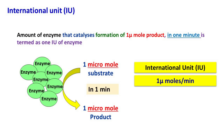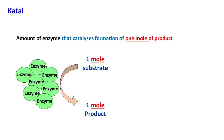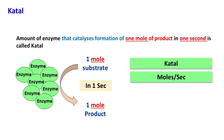The next unit is katal. Katal is defined as the amount of enzyme that catalyzes formation of 1 mole of product in 1 second. Hence, katal will have units of moles per second.